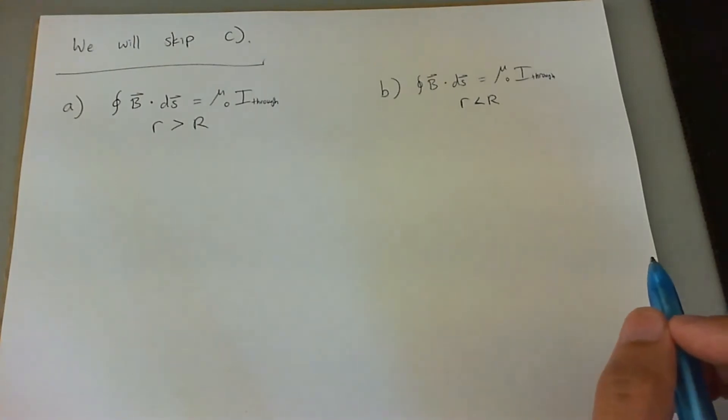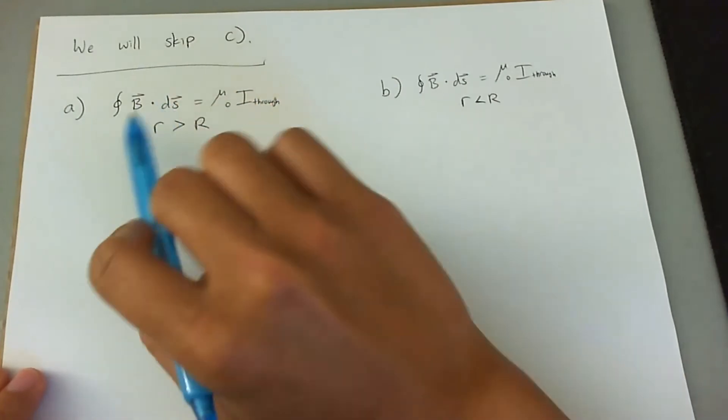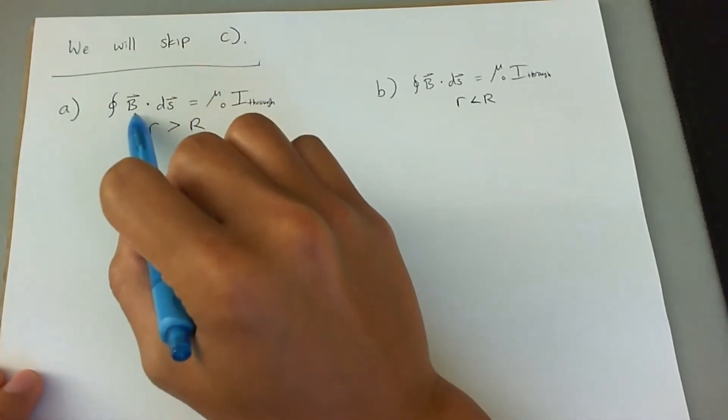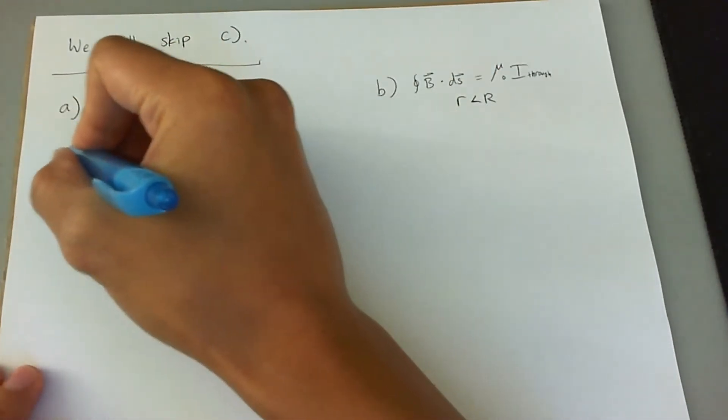So the first thing is I'm going to use Ampere's law for both. And we're going to look at the left side of the equation to see what it means. So a closed integral of B field dot dS. So I'm going to take a path